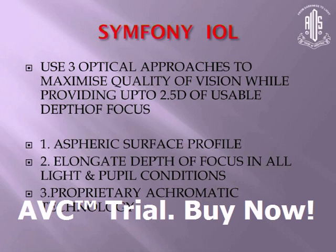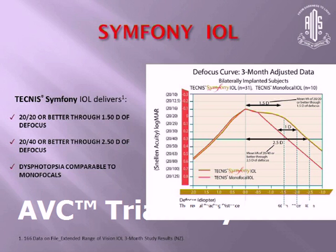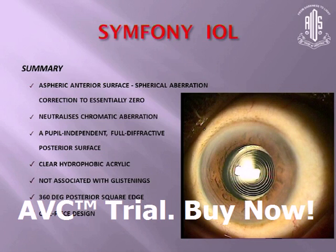Third, the Symphony lens has a proprietary achromatic technology which negates chromatic aberrations. So these Symphony lenses have two important properties: a proprietary echelon design which extends the range of depth of focus, and a proprietary achromatic technology. The basic differences from other IOLs are that it neutralizes chromatic aberration, corrects spherical aberration, is pupil-independent, has a full diffractive posterior surface, is not associated with glistenings, and halos are also considered to be less with this IOL.